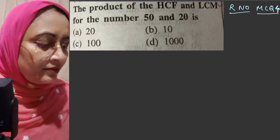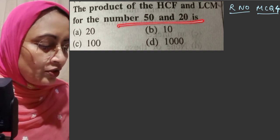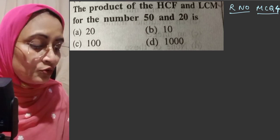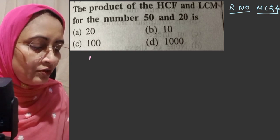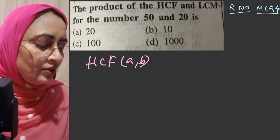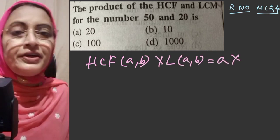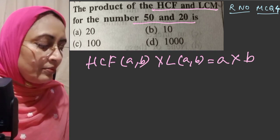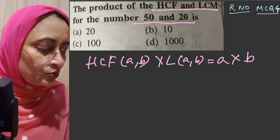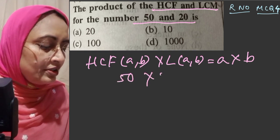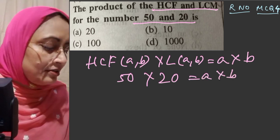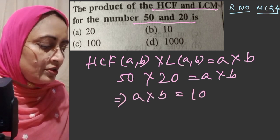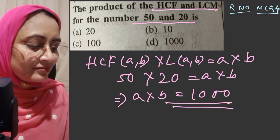Question number 4: the product of the HCF and LCM of the numbers 50 and 20 is? We know the formula: HCF(A,B) × LCM(A,B) = A × B, the product of the two numbers. So HCF × LCM equals 50 × 20, which equals 1000. The product of the two numbers is 1000. The correct answer is option D.